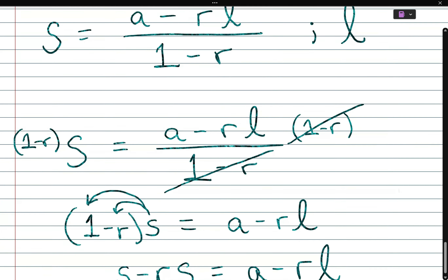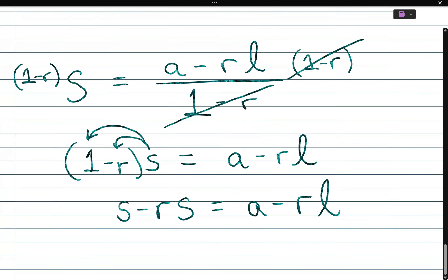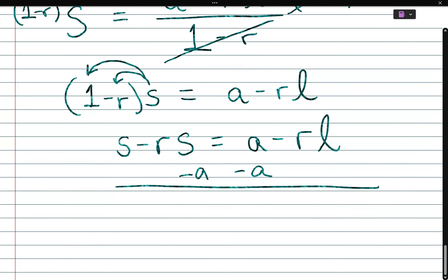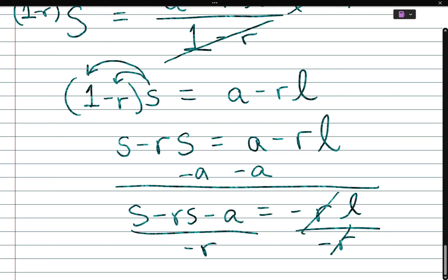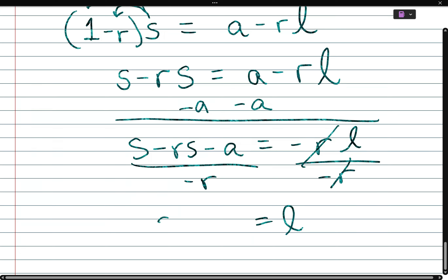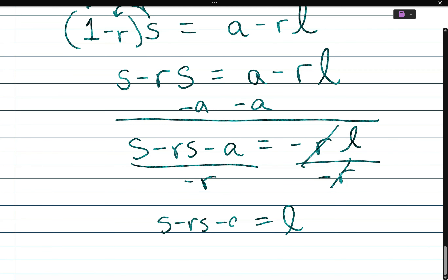Reminding ourselves we're solving for l — we need to get rl by itself, so we subtract a from both sides: s minus rs minus a equals negative rl. Now divide both sides by negative r. The negative r cancels and l is equal to (s minus rs minus a) over negative r.